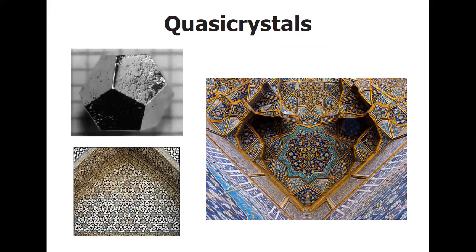Now, since Shechtman's discovery, there have been numerous research works conducted, and many quasicrystals have been discovered to be found, both naturally and artificially. One major example of 2D quasicrystals can be found in medieval Islamic architecture, where scholars have shown that the patterns follow quasicrystal construction.